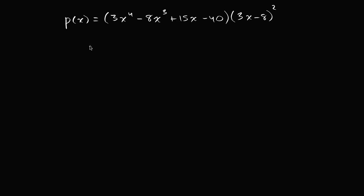I encourage you to give it a go, and then we'll do it together. So I want to solve p of x equal to zero — what x values will make the polynomial equal to zero? I just need to set this right-hand side equal to zero and solve for x. The best way is to factor this out, because if you have a product of expressions equaling zero, you can make it equal zero by any one of them equaling zero.